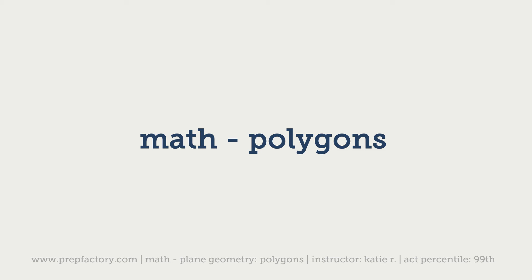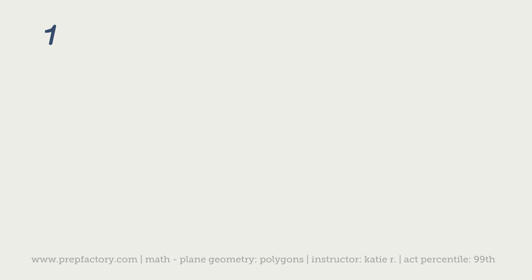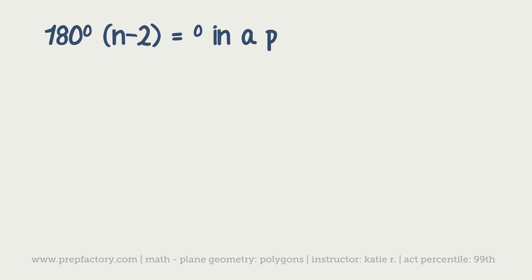On the test you're going to see any number of different types of polygons. They can give you shapes you're more familiar with like hexagons, pentagons, and squares, and they can also give you things you probably aren't as familiar with like dodecagons. The first thing to know about polygons is that you can find the number of degrees within a polygon using the formula: 180 degrees times (n minus 2), where n is the number of sides.